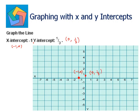So we can just join these two points together to form a straight line. And this is the graph of the line whose x-intercept is negative 1 and y-intercept is 1 by 3.